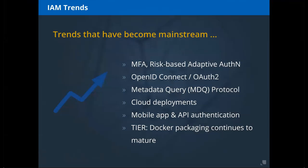Other continuing trends include moving infrastructure and services into the cloud, mobile app and API authentication — Unicon has been helping clients have their mobile apps leverage various techniques — and Docker packaging. The Internet2 TIER effort now has pretty much all components — Shib, Grouper, CoManage, the Shib UI — available as Docker packages to run as containers.